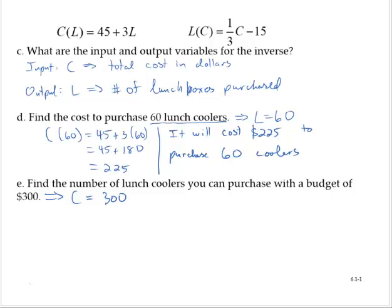And we can substitute C in the inverse. So we'd have L(300) = (1/3)(300) - 15. And so that's 100 - 15, which is 85.